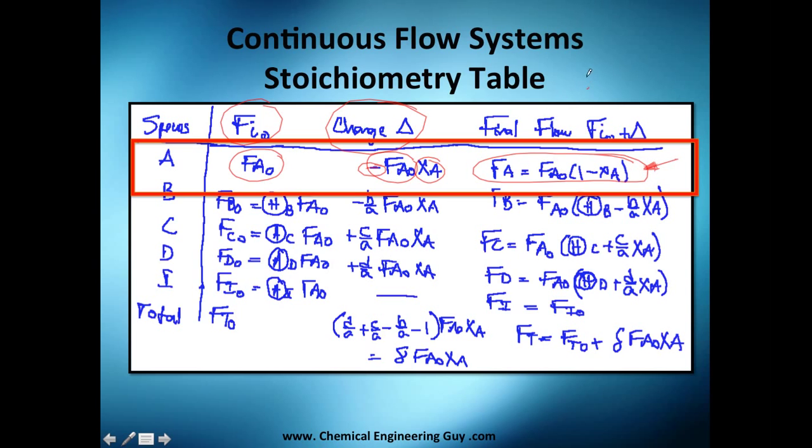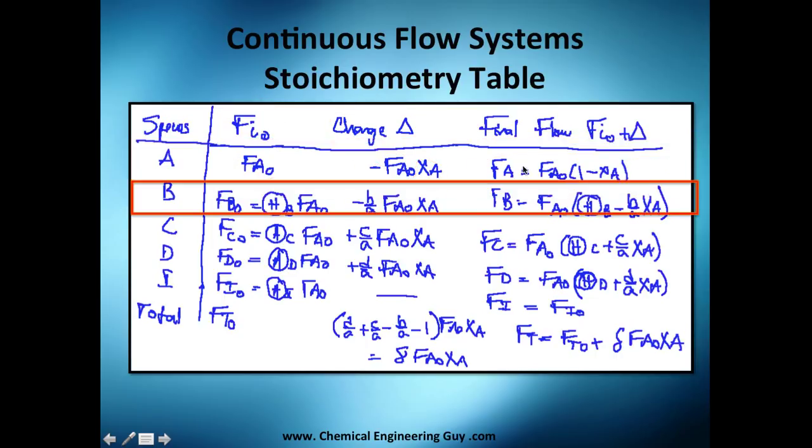That's for species A. What will happen if you have a reactant aside A, or if you have another reactant? We want to base it also in terms of A.